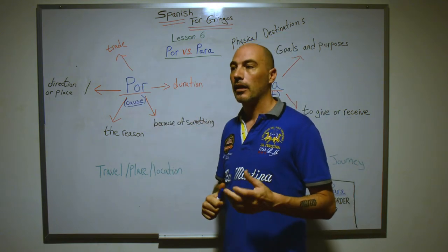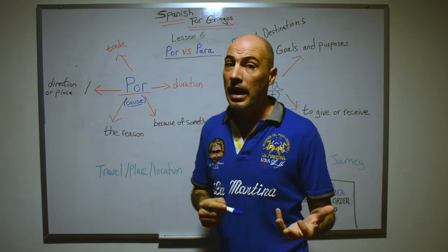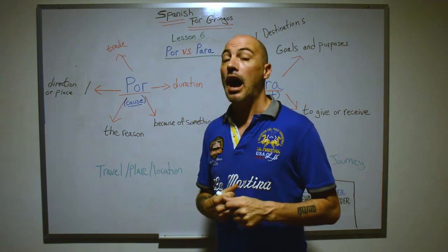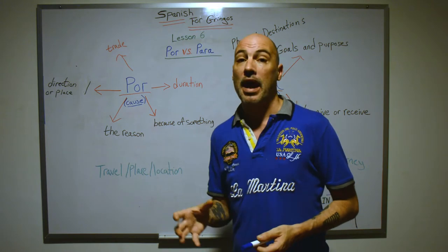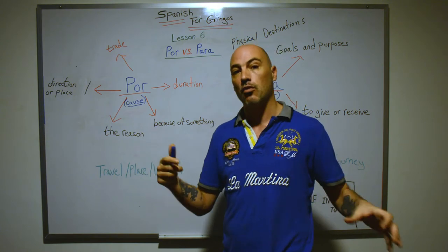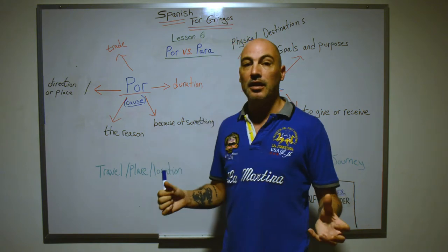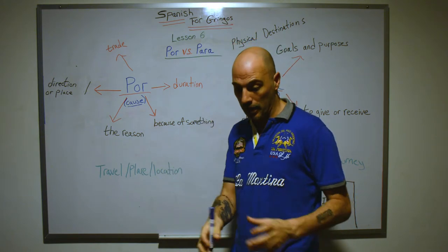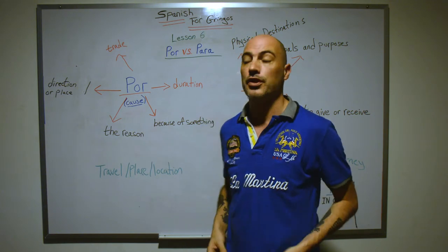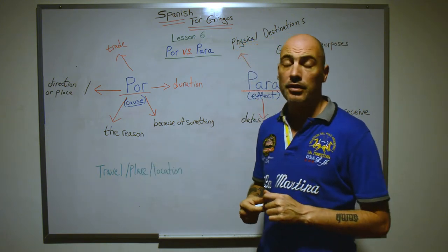For trade, you could say: dame mi manzana por tu naranja — I will give you my apple for your orange. Anytime you're talking about exchanging something for money or any type of commerce or trade, you use por. Think of por as an equal sign — my apple equals your orange, so I will give you this for your orange.